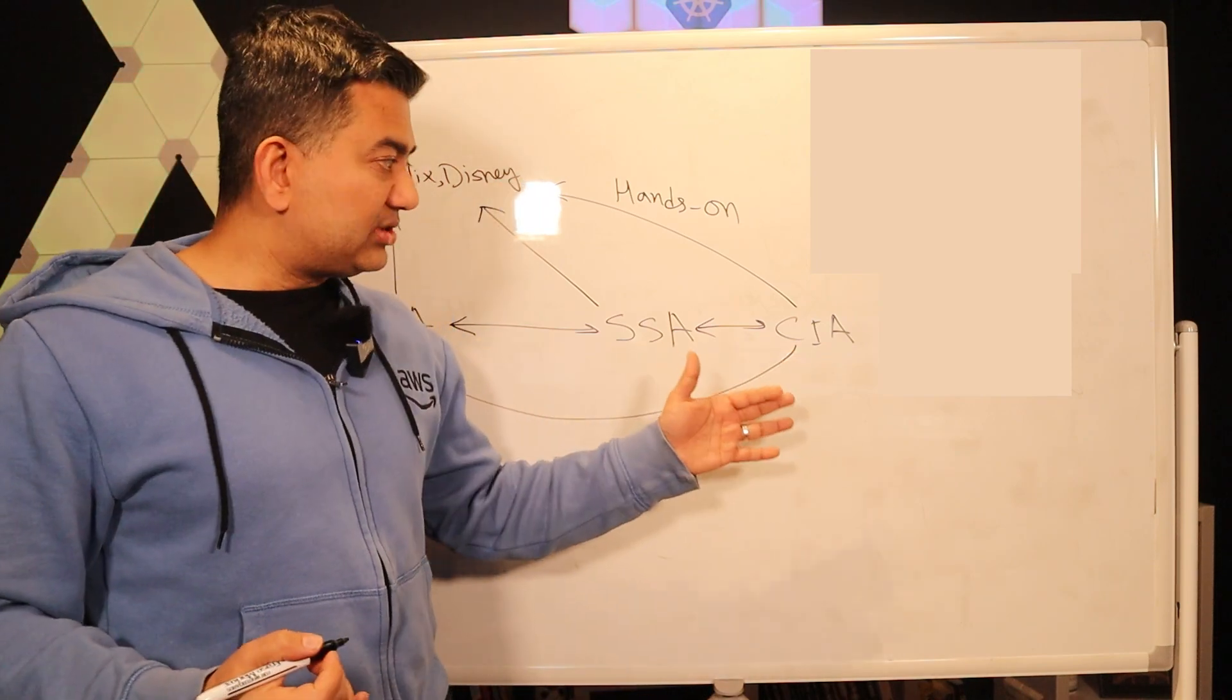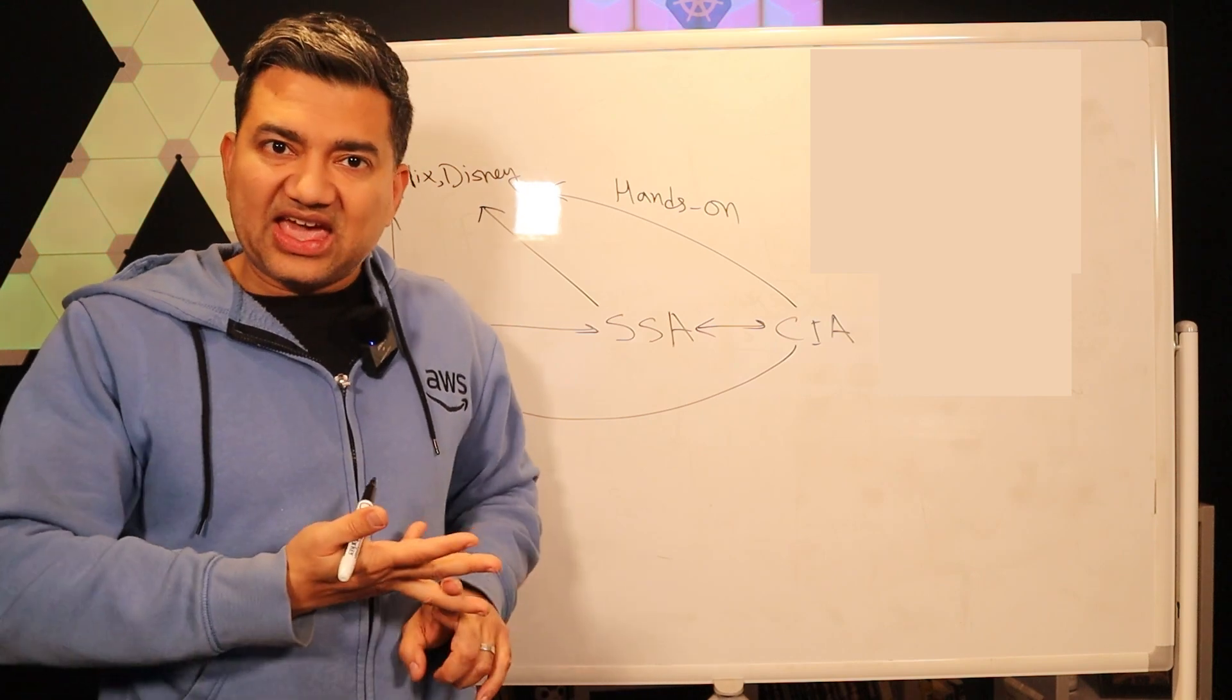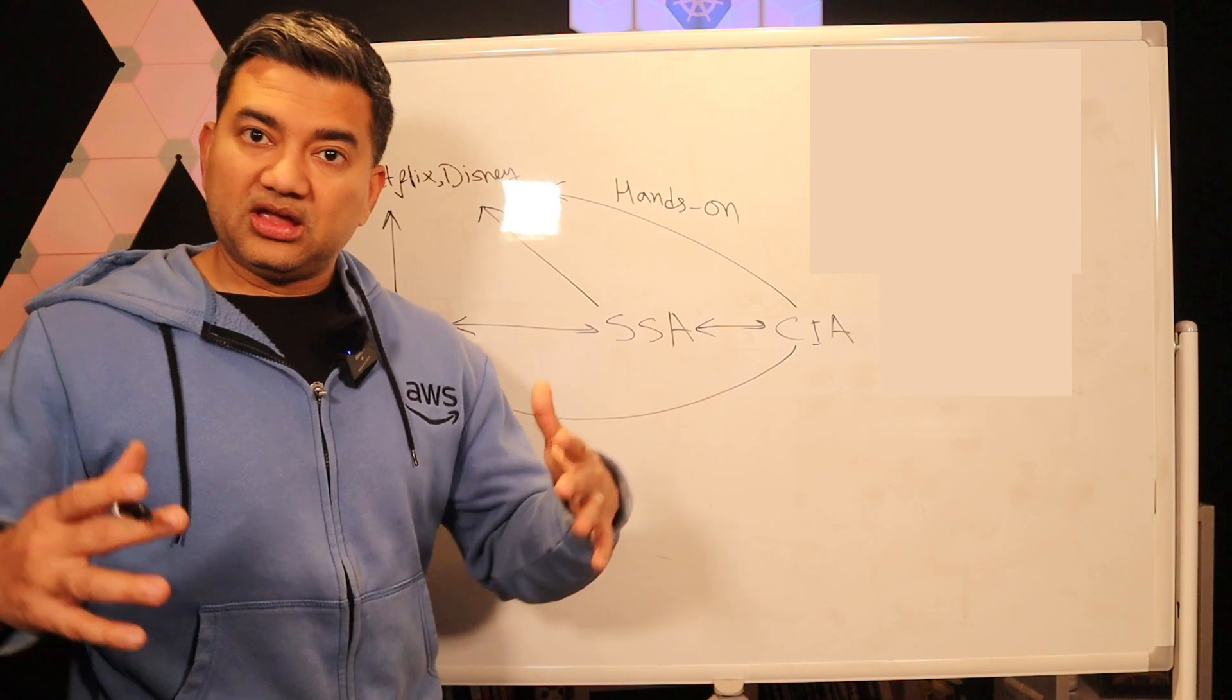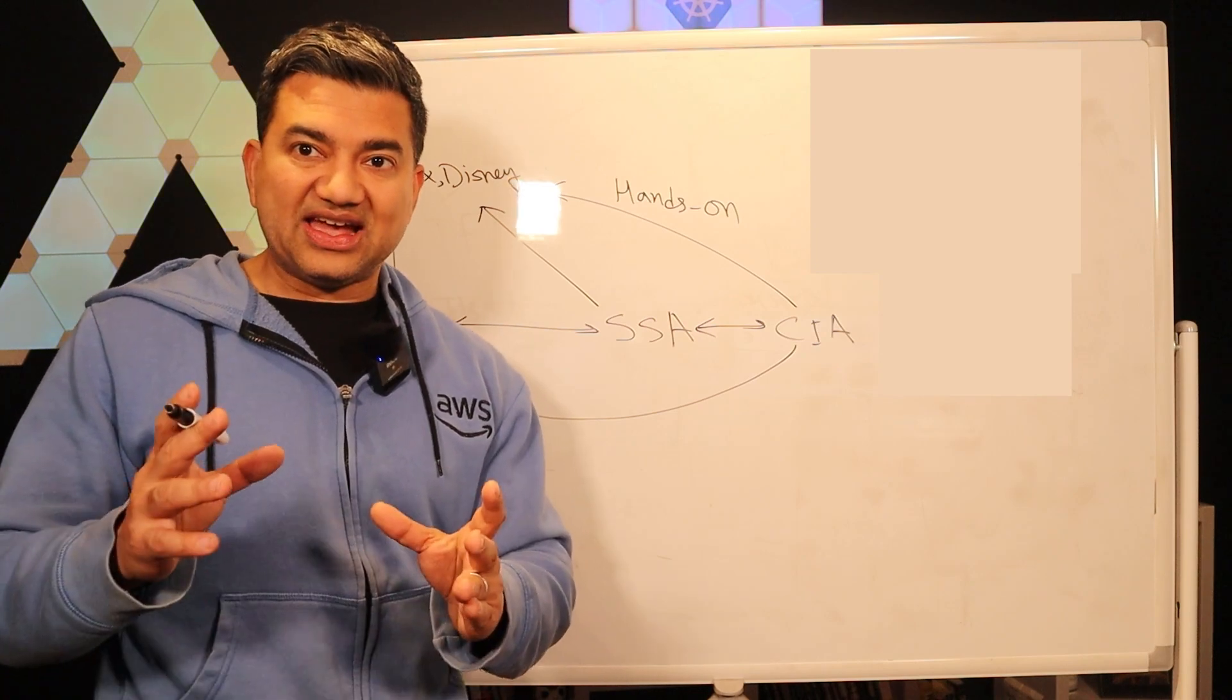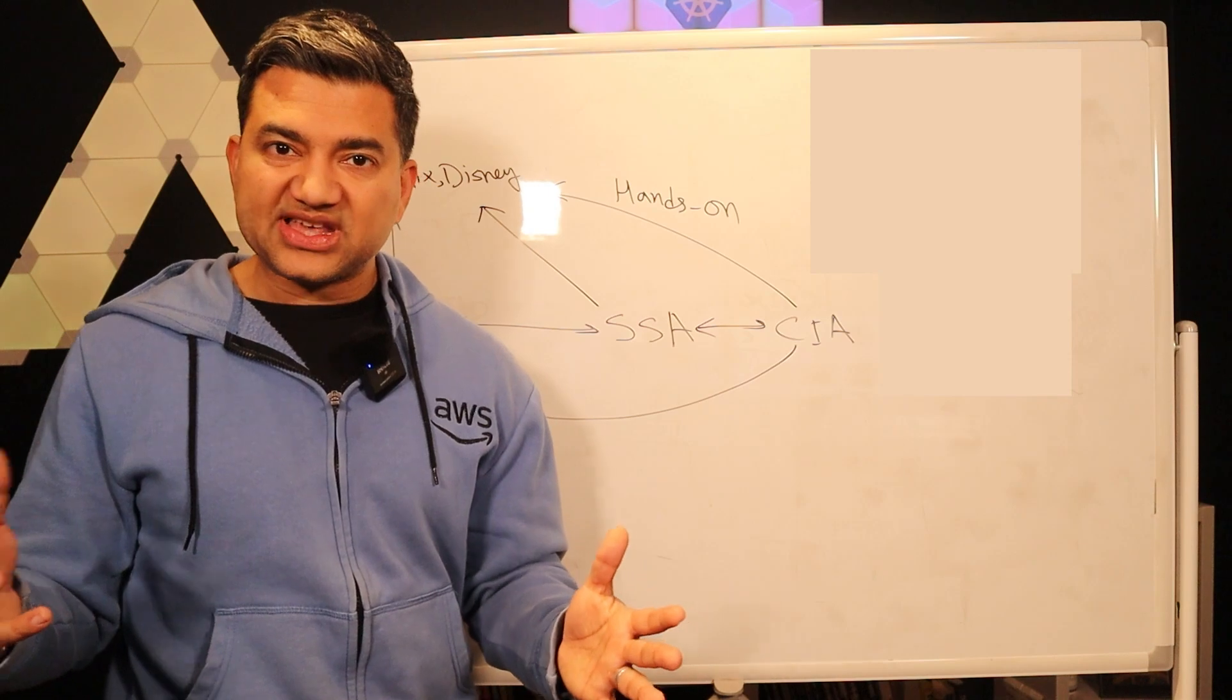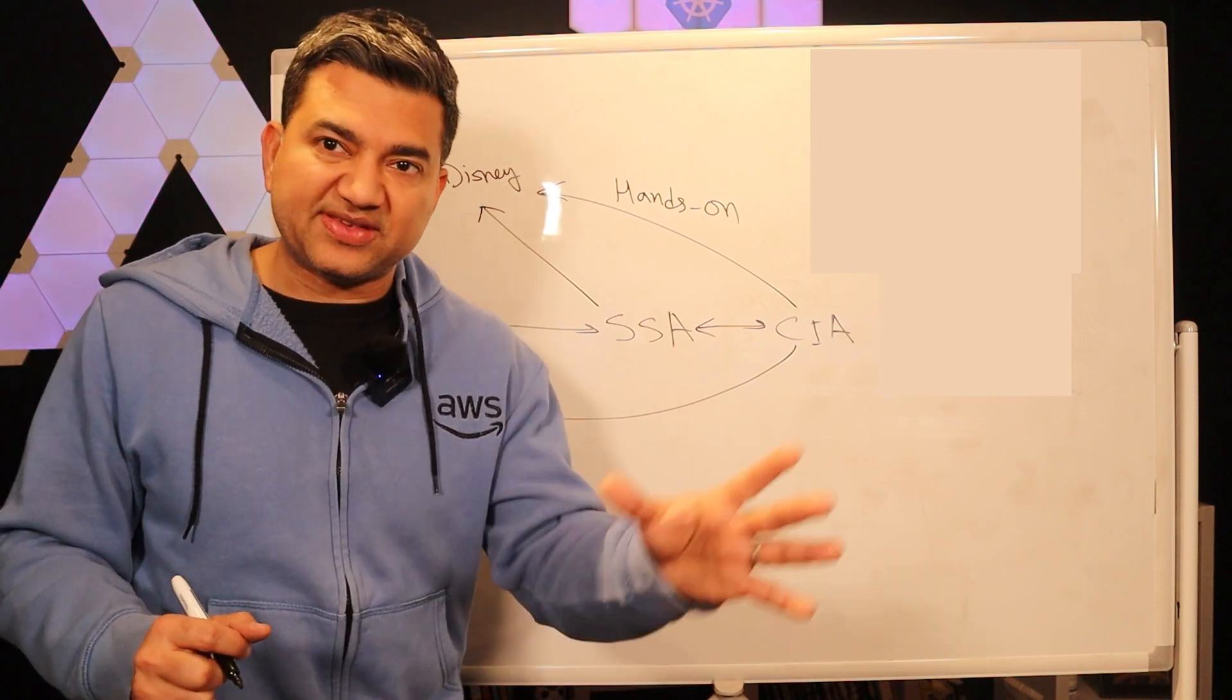For example, if a particular CIA is dealing with Kubernetes, it will say I want you to know the hands-on implementation on Kubernetes, EKS, Helm charts, Kustomize, etc. If it is a big data or analytics CIA, it would say I want you to be hands-on on service A, service B, service C. If it's a machine learning CIA, it will say I want you to be hands-on on SageMaker, Bedrock, large language models, specific algorithms, etc.